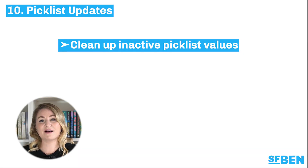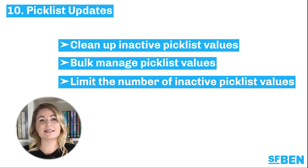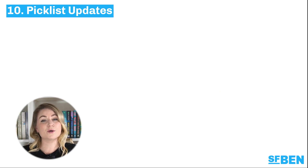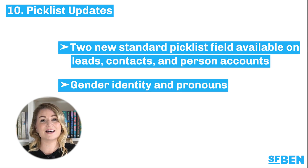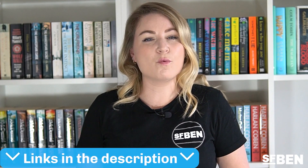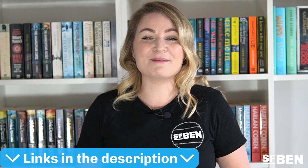Picklist fields saw a lot of love in 2022 with multiple new features being released in beta. The following features will be generally available in the Spring 23 release: clean up inactive picklist values, bulk manage picklist values, and limit the number of inactive picklist values. There are also two new standard picklist fields available on leads, contacts, and person accounts: gender identity and pronouns. For a complete breakdown of what's new for Salesforce picklist, check out Andrea's deep dive on the Salesforce Ben blog.